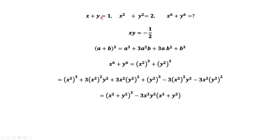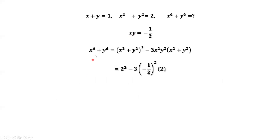Therefore, the last two terms equal 3 times x squared y squared times x squared plus y squared. From the given conditions, x squared plus y squared equals 2, and from our earlier result, x times y equals negative one half. Applying these values, x to the power of 6 plus y to the power of 6 equals 2 to the power of 3 minus 3 times negative one half squared times 2. Simplifying, we have the final answer, which is 13 over 2.